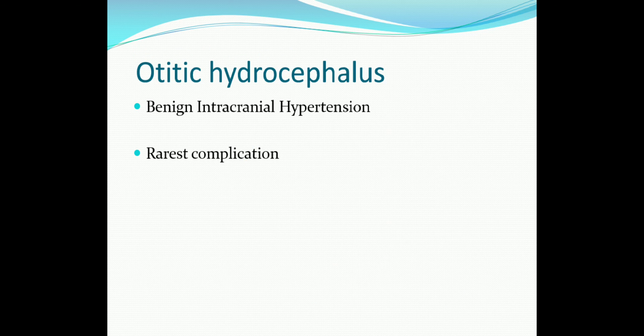The last intracranial complication is ototic hydrocephalus — a type of benign intracranial hypertension with increased intracranial pressure but normal CSF findings. The exact etiology is unknown, but it is believed to result from lateral sinus thrombophlebitis with concomitant obstruction of other venous sinuses. Treatment is reduction of intracranial pressure by steroids, diuretics, etc., and occasionally a ventriculoperitoneal shunt may also be required.